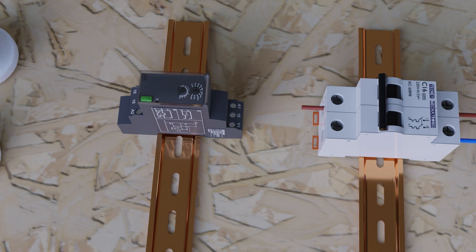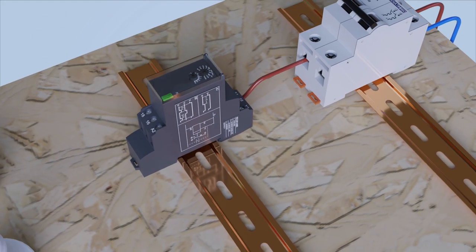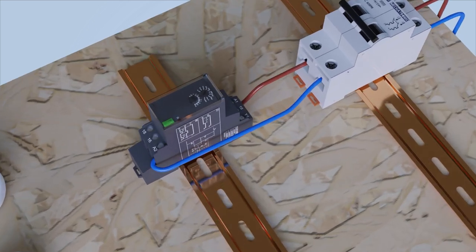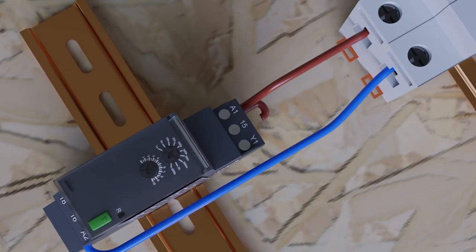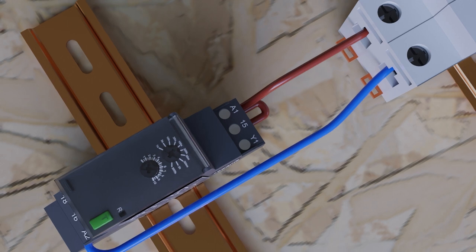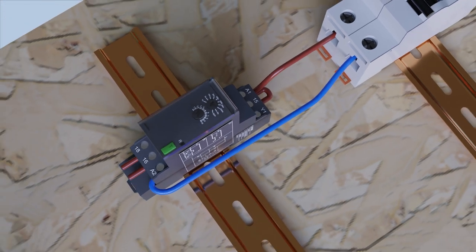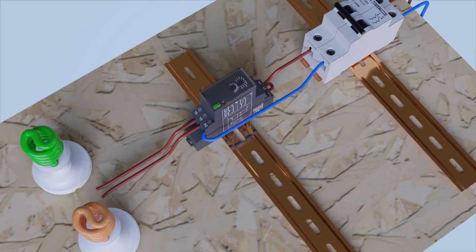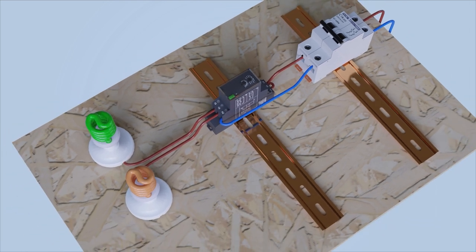The timer coil will be powered through its terminals A1 and terminal A2. Terminal 15 will be connected with the same phase line that reaches terminal A1.